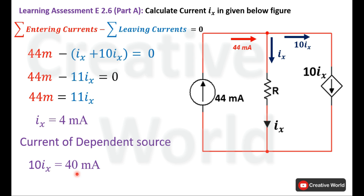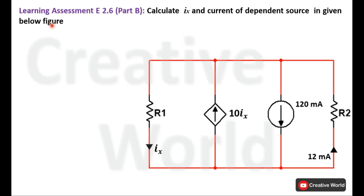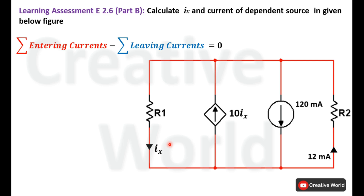Now move towards Part B of this learning assessment. We have to calculate the value of Ix and the value of the dependent current source in the given figure. Similar to Part A, the only information provided for all elements is in the form of currents, so we will use Kirchhoff's Current Law. Before proceeding, we identify the entering and leaving currents at a node. This circuit also has two nodes; one is taken as the reference or ground node, and we observe all entering and leaving currents at the other node.